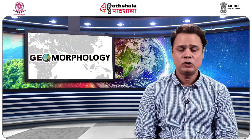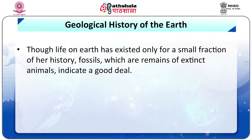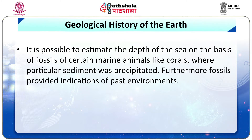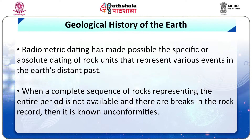Now let us understand the geological history of the earth. Though life on earth has existed only for a small fraction of our history, fossils which are remains of extinct animals indicate a good deal. It is possible to estimate the depth of the sea on the basis of fossils of certain marine animals like coral where particle sediments were precipitated. Furthermore, fossils provided indication of past environments. Radiometric dating has made possible the specific or absolute dating of rock units that represent various events in the earth's distant past. When a complete sequence of rocks is not available and there are breaks in the rock records, then it is known as unconformities.